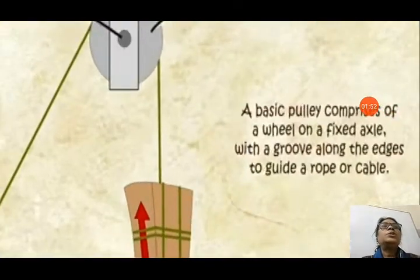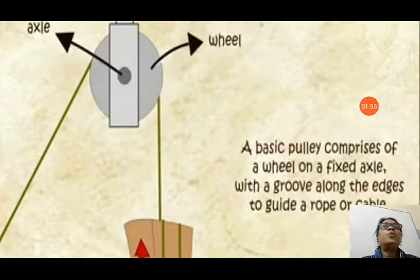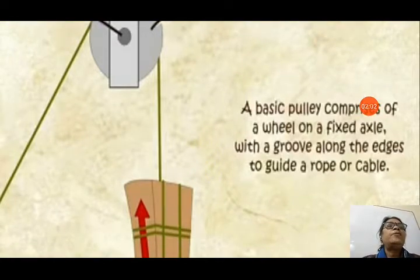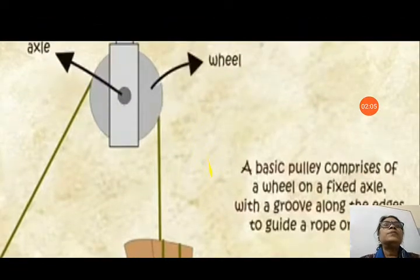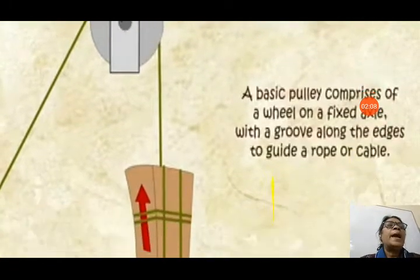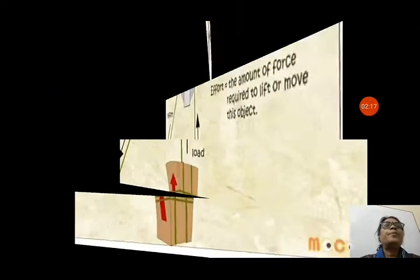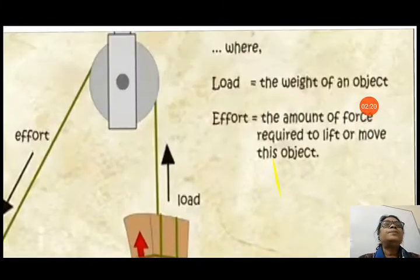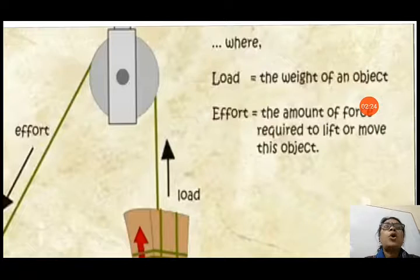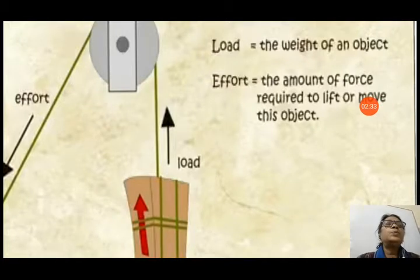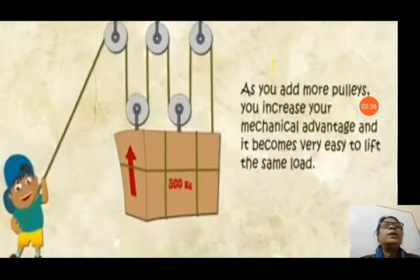Looking at the picture, you can see a wheel with a groove, a rope attached, and a fixed axle to move the wheel. A basic pulley comprises a wheel on a fixed axle, with a groove along the edges to guide a rope or cable. The load is the weight of the object to be lifted, and the effort is the amount of force required to lift or move that object.